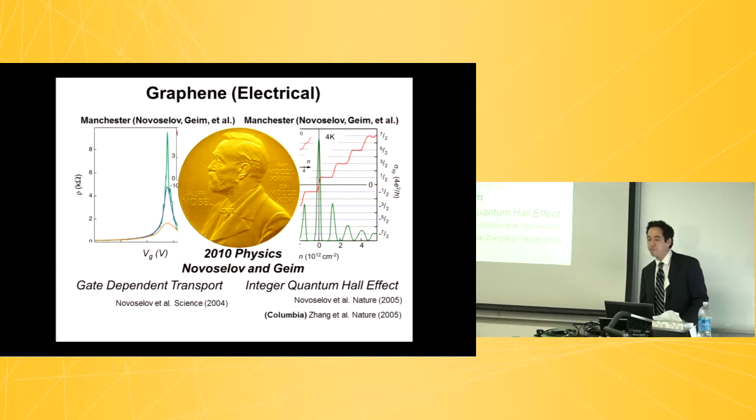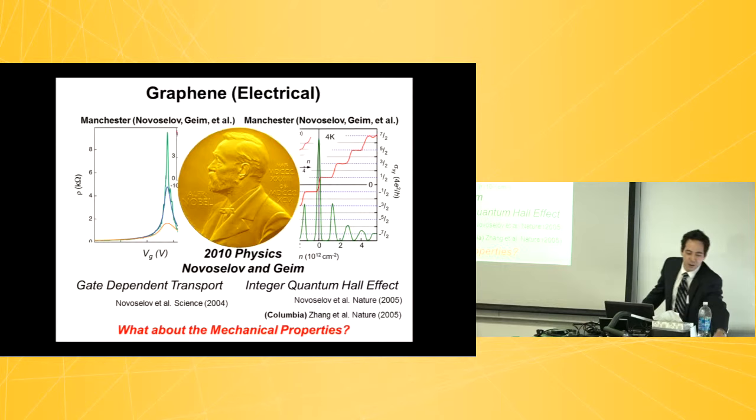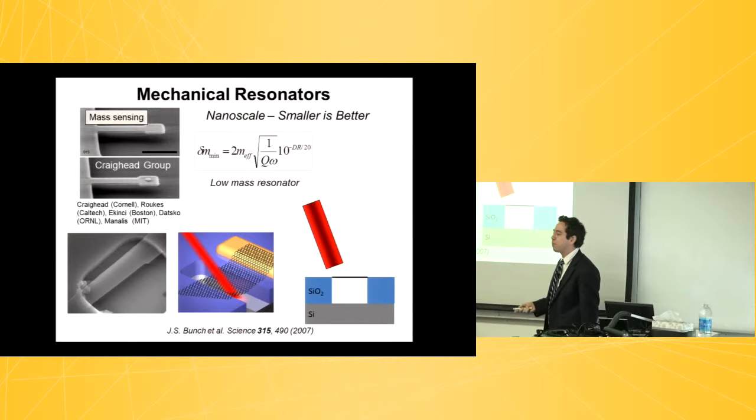So the question you can ask is, you've got this, for the first time you're able to isolate this purely two-dimensional sheet of atoms. It's got these nice electrical properties, but what about mechanically? Here's something where it's really different than silicon. It's one atom thin. Imagine your sheet of paper, one atom thin. What do you do with this sheet of paper that's one atom thin? That's where my interest is.